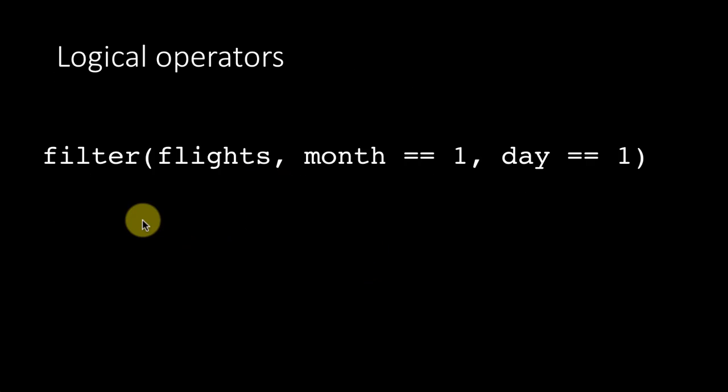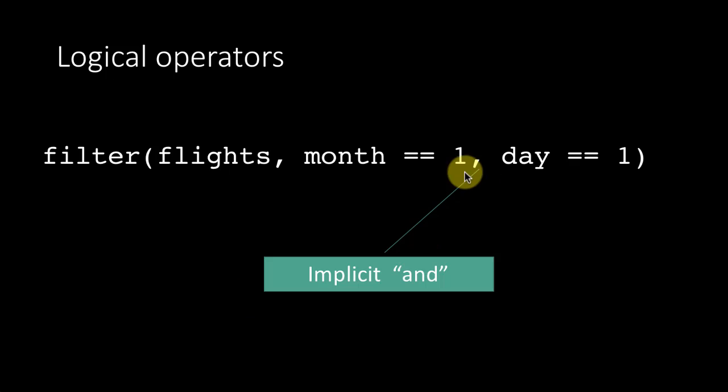Now the important thing is here, I said filter flights and I had two conditions: month is one, day is one, and I just separated them by comma. Implicitly, this means and. That is, we are saying month is one and day is one. That is implicit in the filter function. When you just put a comma, it is implicit that you want both those conditions to be satisfied. Of course, you can make it explicit by putting the and operator.